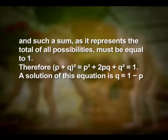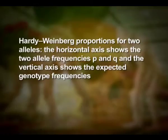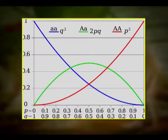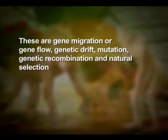A solution of this equation is q = 1 − p. The Hardy-Weinberg proportions diagram shows the two allele frequencies p and q on the horizontal axis and the expected genotype frequencies on the vertical axis. Each line shows one of the three possible genotypes. Five factors are known to affect Hardy-Weinberg equilibrium: gene migration or gene flow, genetic drift, mutation, genetic recombination, and natural selection.